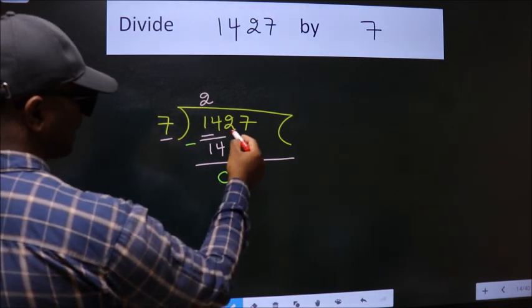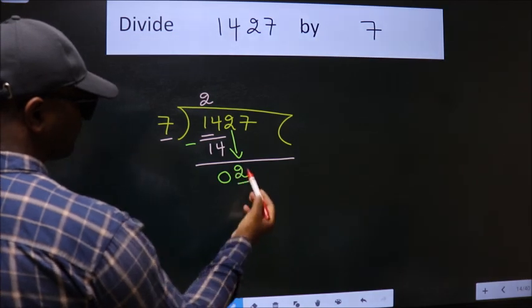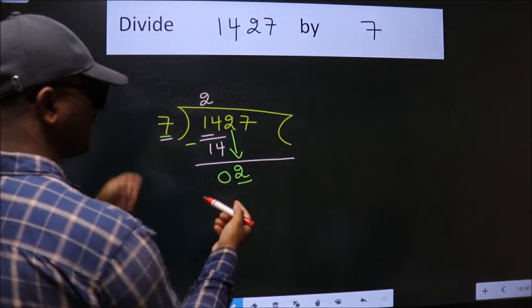After this, bring down the beside number. So, 2 down. Here we have 2. Here 7. 2 is smaller than 7.